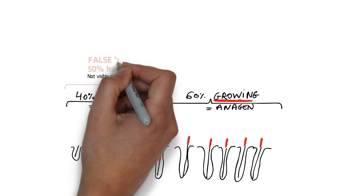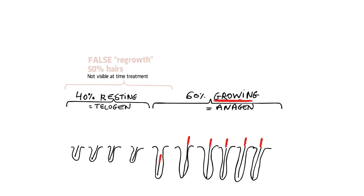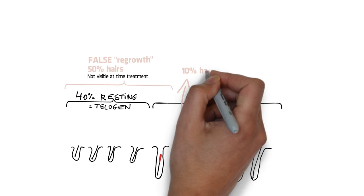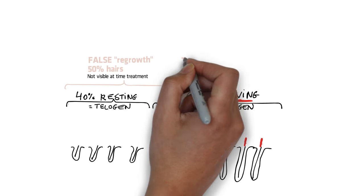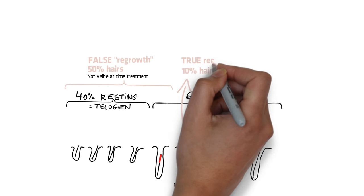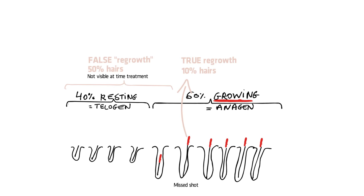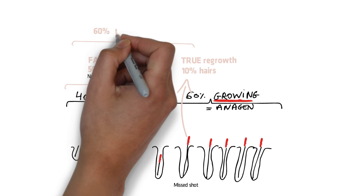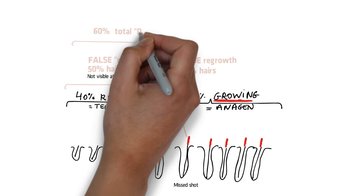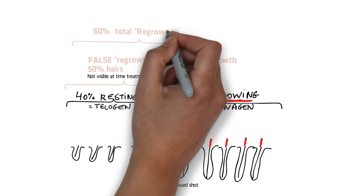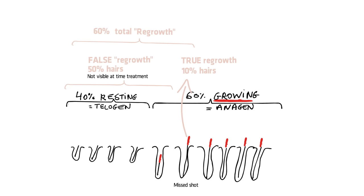This is called false regrowth. Let's say in a sixth hair, the shot of the electrologist failed to kill the hair — this is called true regrowth. This means you will have a total regrowth of 6 out of 10 hairs after the first session, and only one of them, in this example, is true regrowth.